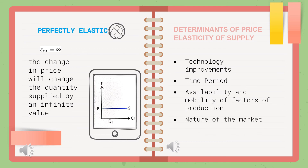The fourth determinant is the nature of the market. The easier it is to enter a market, the greater the number of firms available, making market supply elastic. For instance, if a firm sells rubber gloves, they can also enter the market for other rubber products because they use rubber as their main resource. Hence, market supply for rubber-related products will increase, making supply elastic.